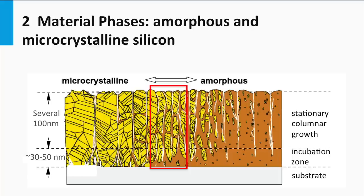The bandgap of nanocrystalline silicon is close to that of crystalline silicon due to the crystalline network in the grains. The bandgap of amorphous silicon is larger relative to crystalline silicon. The distortions in bond angles and bond lengths make the bandgap larger in reference to the crystalline silicon lattice.